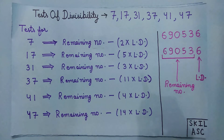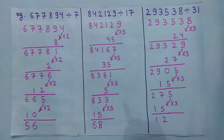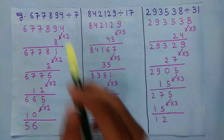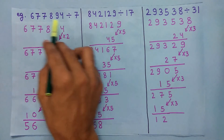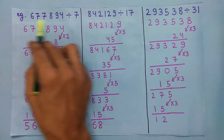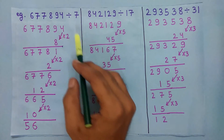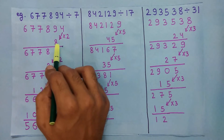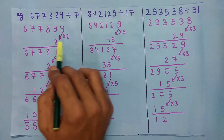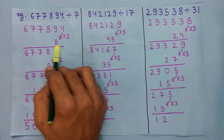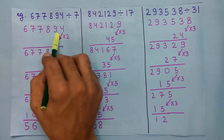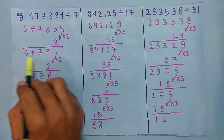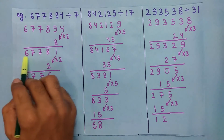To better understand this, let's take an example. To check if this number is divisible by 7 or not, multiply the last digit by 2 and we get 8. Now subtract this 8 from the remaining number, and we get this number.